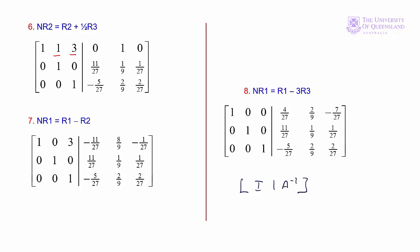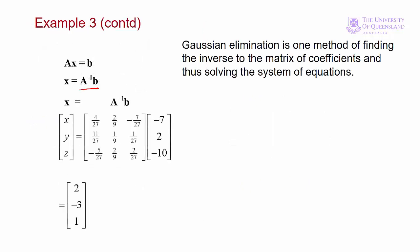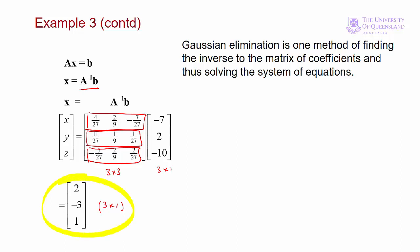We can use that inverse to solve for our system of equations by pre-multiplying the vector of constants. Our inverse is a 3×3 matrix and the vector of constants is 3×1, so the product is a 3×1 matrix. We multiply the rows of the inverse by the column vector and get our solution — the same solution we obtained in examples 1 and 2.